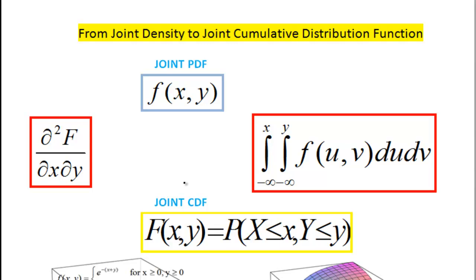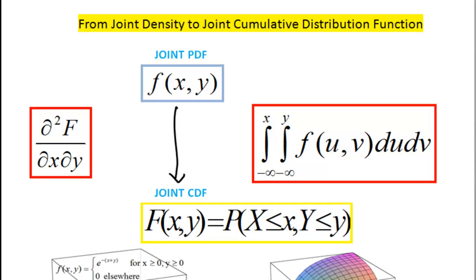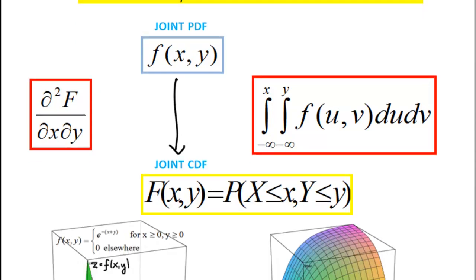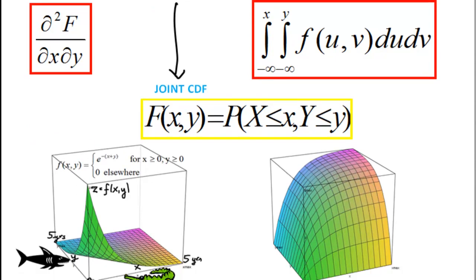In this video we will learn how to get from joint PDF to joint CDF. PDF stands for probability density function, CDF stands for cumulative distribution function. The reason why we want to get from joint PDF to joint CDF is because we can't really do much with the joint probability density function.